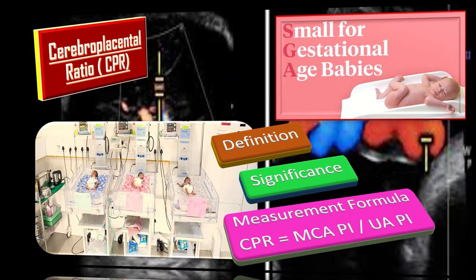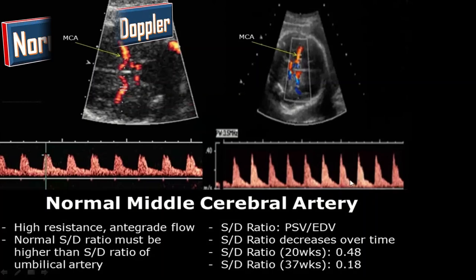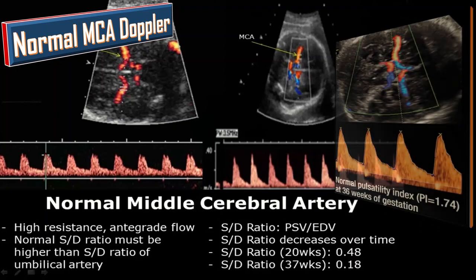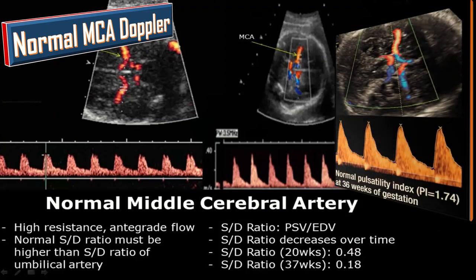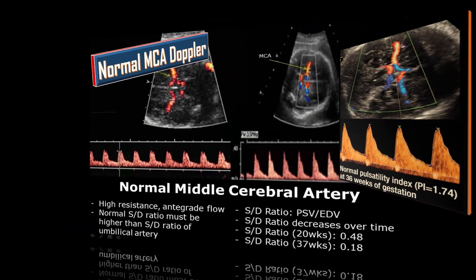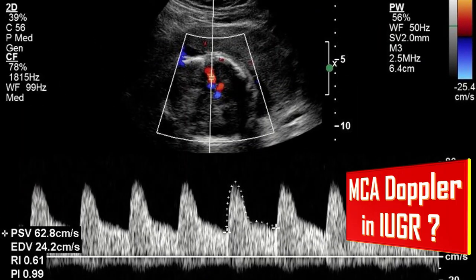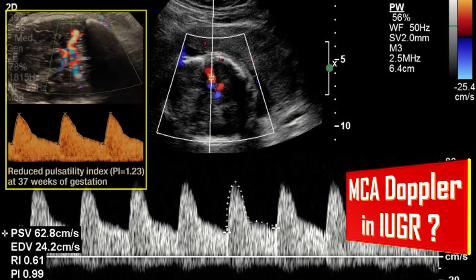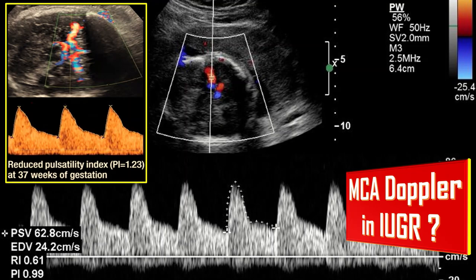How does a normal MCA Doppler look? There is a systolic and diastolic flow pattern in normal MCA Doppler, and the pulsatility index is normally 1.74. In IUGR, there is a systolic waveform with increased diastolic flow due to reduced pulsatility index because of the brain sparing effect. This means resistance in the brain vasculature has been decreased.